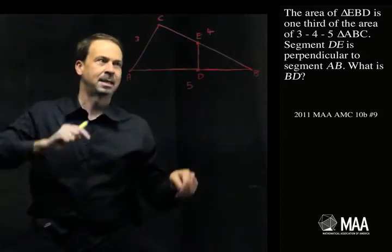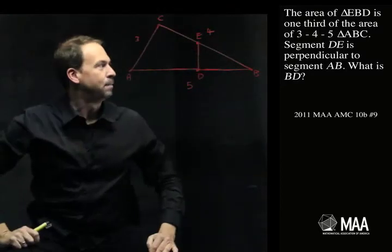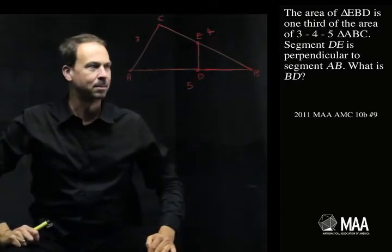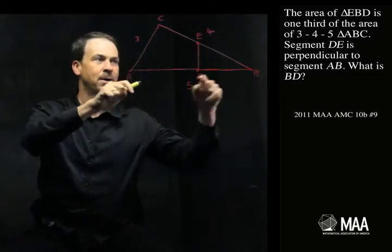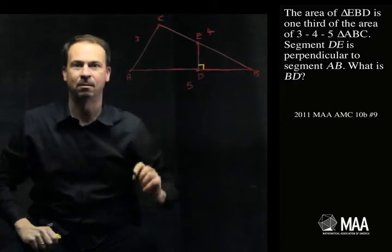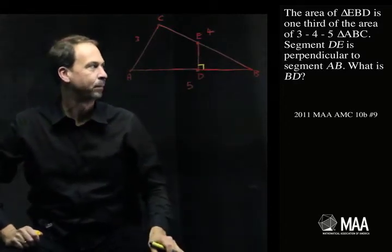Segment DE, where's DE? Here it is, is perpendicular. What does perpendicular mean? 90 degrees to, I guess, to the segment AB, which is along the bottom. Alright, so this vertical segment is actually vertical. It's 90 degrees to the horizontal segment AB.